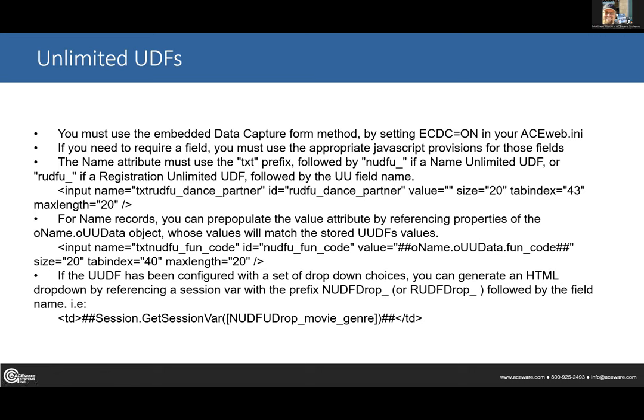One example I've seen with unlimited UDFs is with ethnicity — being able to choose multiple ethnicities. They set up different unlimited UDF checkboxes so you can select, for example, Native American and Latino — whatever multiple ethnicities apply. That's based on state reporting requirements, and I think more and more states are going to require that capability.